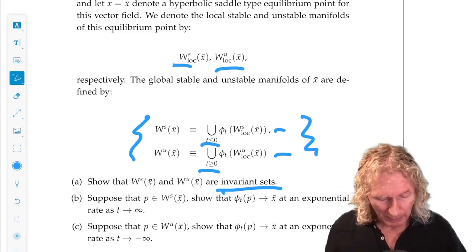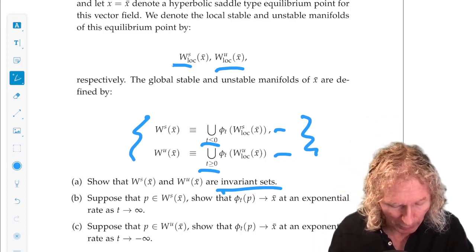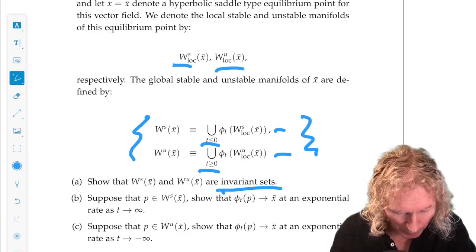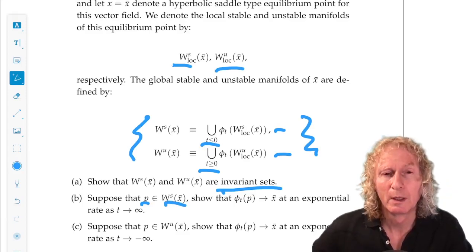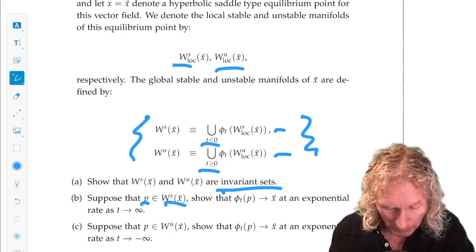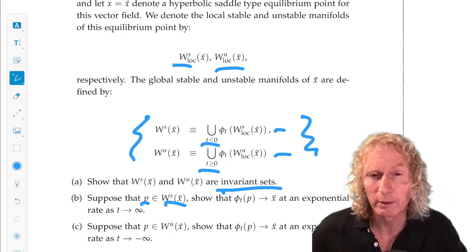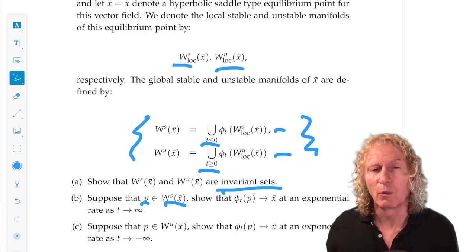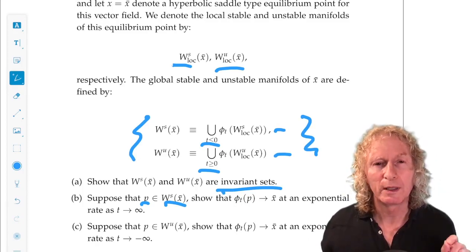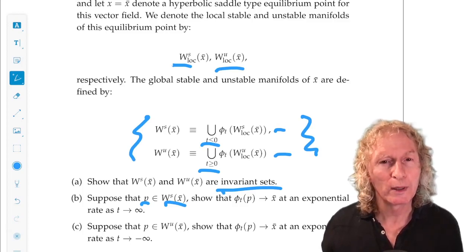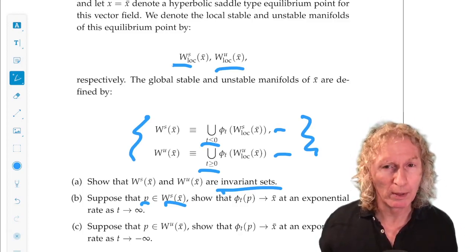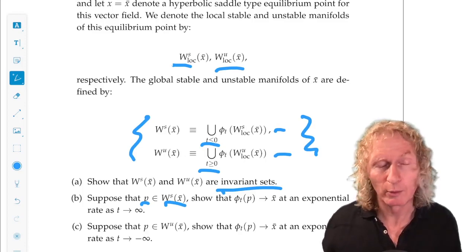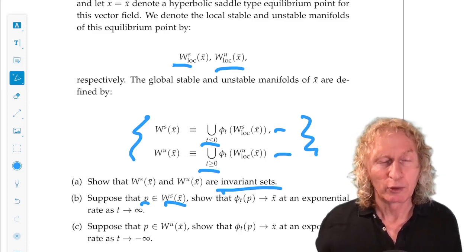Now, b and c are similar, so I'll just start to talk about b. Suppose you pick a point in the global stable manifold, show that that point approaches the origin at an exponential rate. So what that means is we argued that any point in the local stable manifold approaches the origin or the equilibrium point, so our x bar,